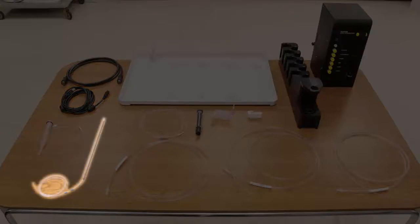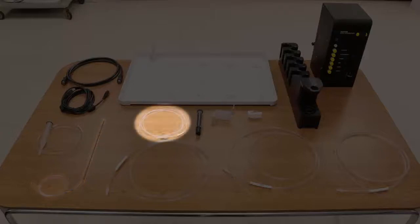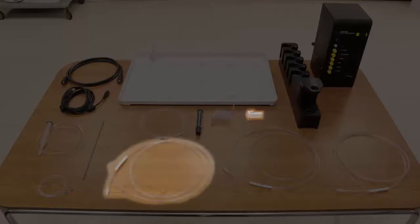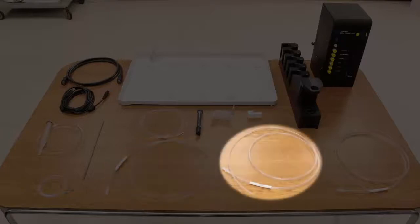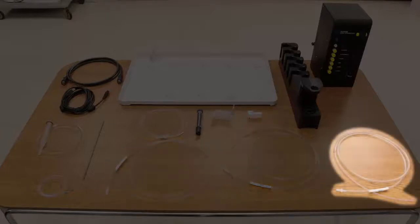You'll also need a sample probe with separate nut and ferrule. We will be using a 1.0 millimeter probe. Additional components include the ICP tube, the syringe, the sample loop, the tubing clip, the syringe diluent tube, the waste tube, and the rinse tube.